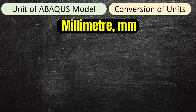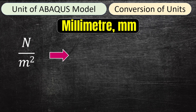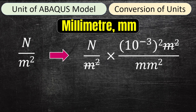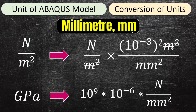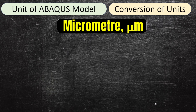In a millimeter unit system, the parameter for Young's modulus has to be specified in newtons per millimeter squared to maintain unit consistency in Abacus. So one gigapascal becomes 10^3 newtons per millimeter squared. Students often ask about micrometer systems, since many models on this channel are in micrometers.